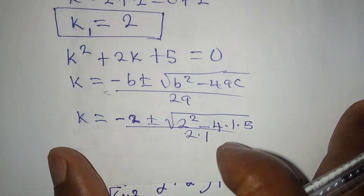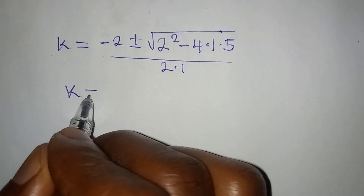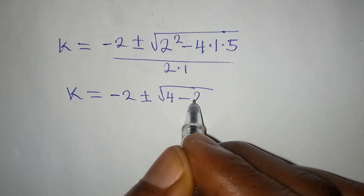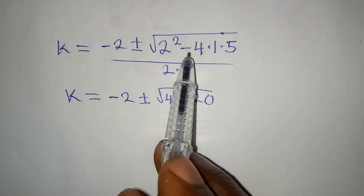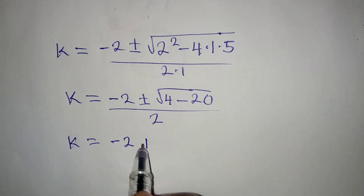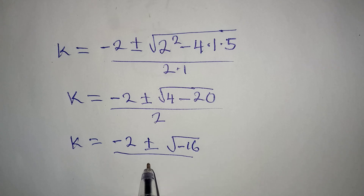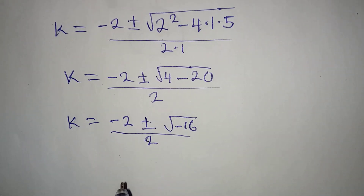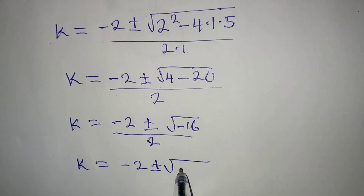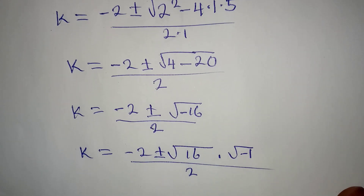Continuing: k equals negative 2, plus or minus the square root of 4 minus 20, because 2 squared is 4 and 4 times 1 times 5 is 20, all over 2. So k equals negative 2, plus or minus the square root of negative 16, all over 2. We then separate this as the square root of 16 multiplied by the square root of negative 1, all over 2.